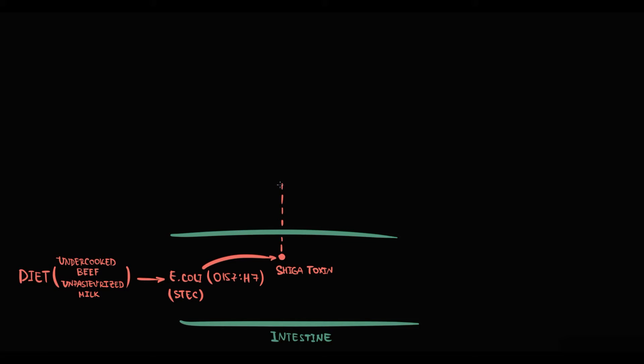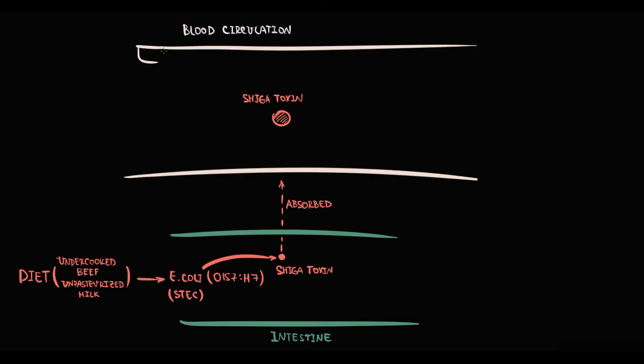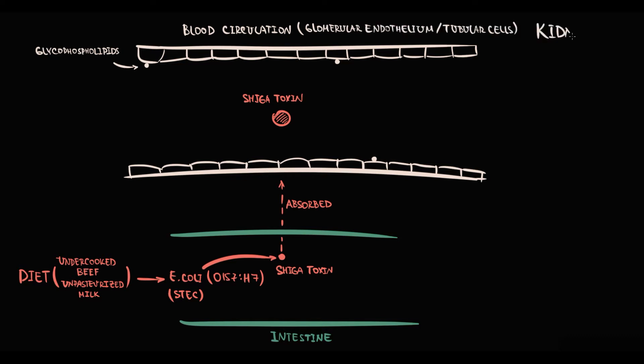Part of Shiga toxin from the intestinal lumen is absorbed into blood circulation. The specific feature is that this toxin is highly tropic to glycophospholipids. Glycophospholipids are present on multiple cells in our body, but very important, the highest quantity is present on glomerular endothelium and tubular cells, both located in kidney tissue.